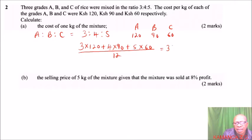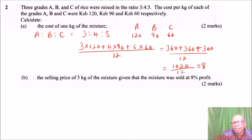3 times 120 gives 360, 4 times 90 gives 360, 5 times 60 gives 300. If you add this, 720 plus 300 gives 1020. Divide by 12 and that gives 85. So 1 kg of the mixture would cost 85 shillings.